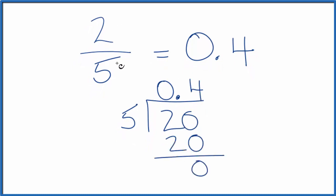So 2 fifths, that's equal to 0.4, just like we found when we typed in the calculator.